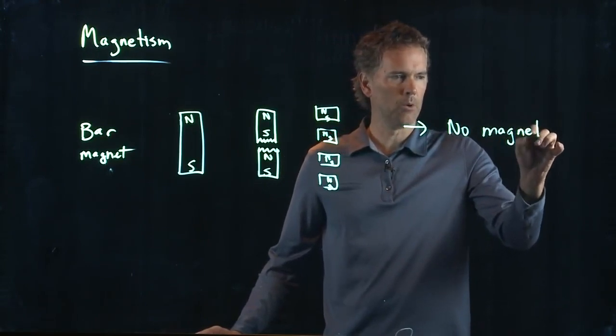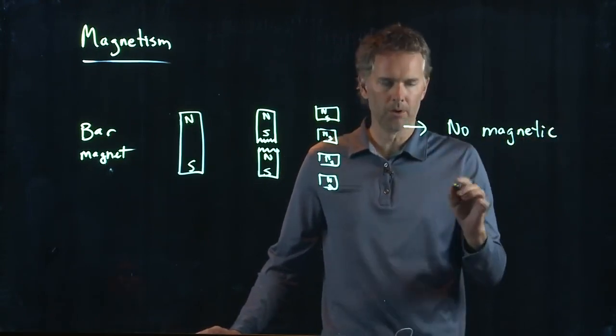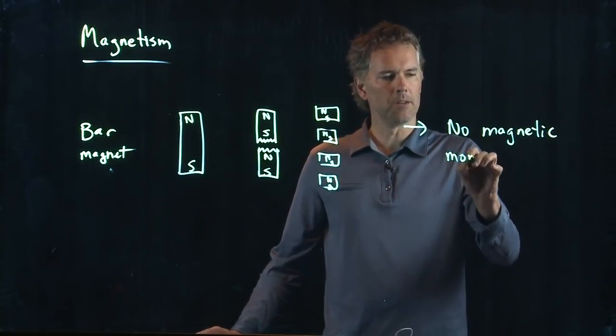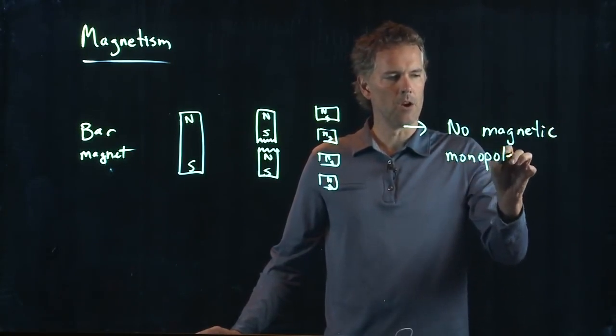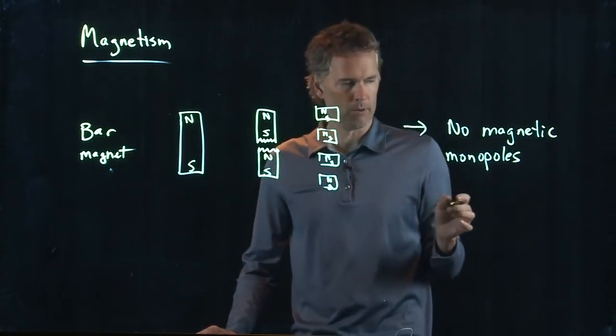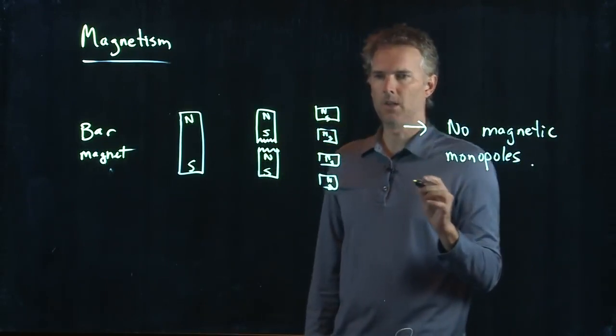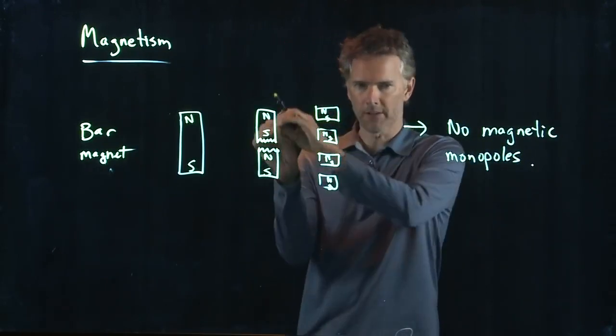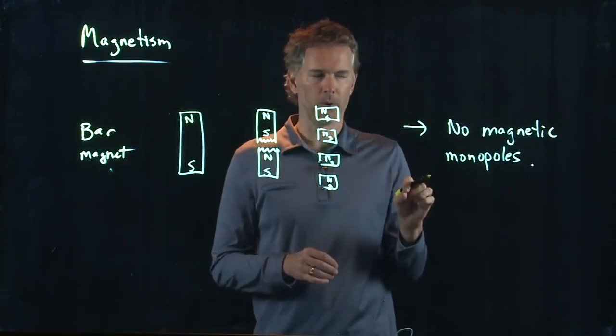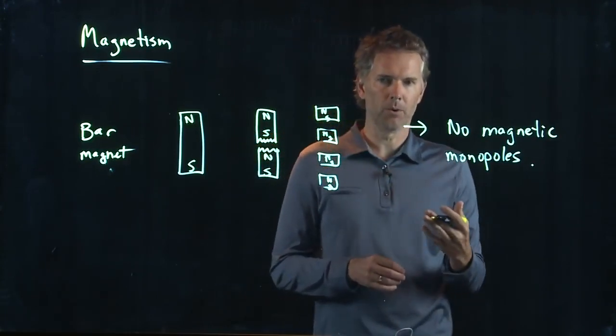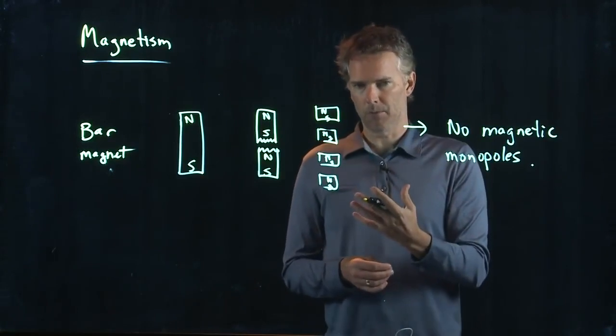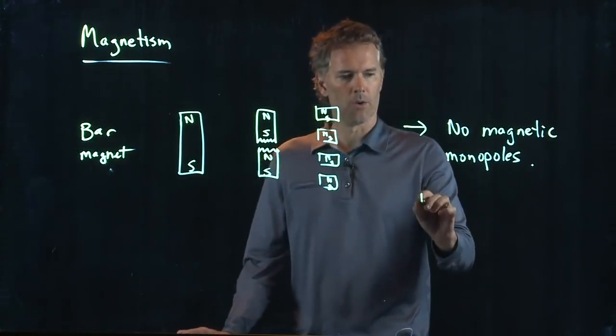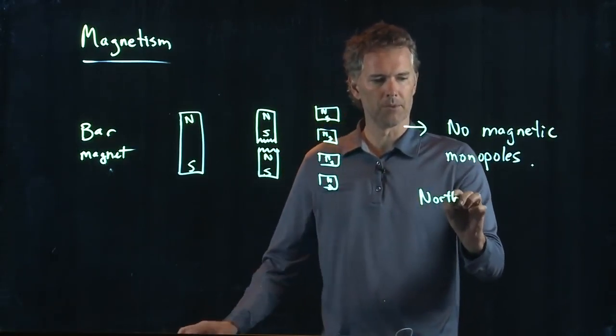just a north pole or just a south pole. Okay, and this is the statement there are no magnetic monopoles. Okay, you can't have just a north pole. You can't have just a south pole. Anytime you have a north pole, you automatically have a south pole. Okay, north and south always come together.